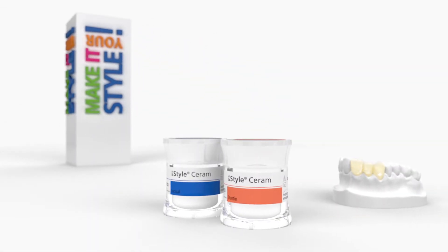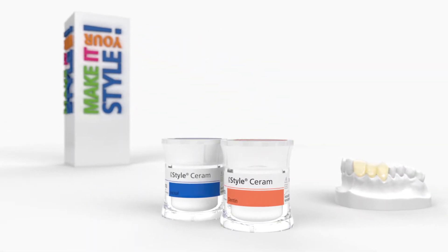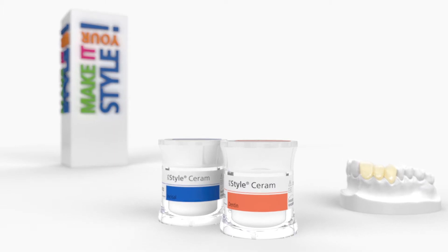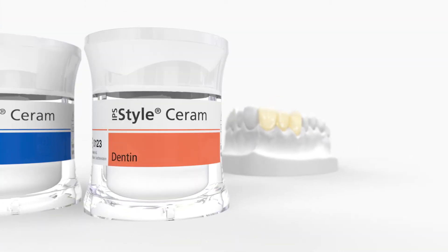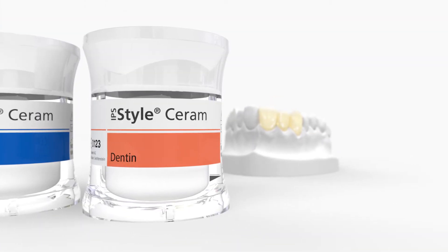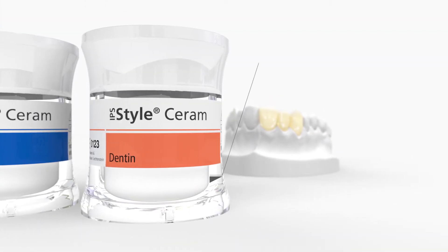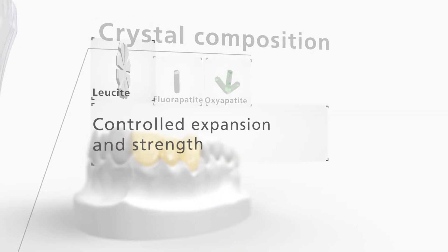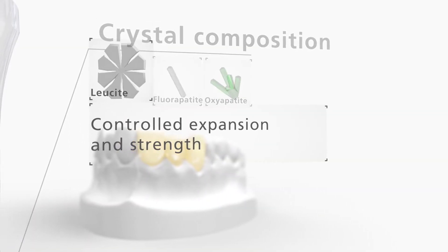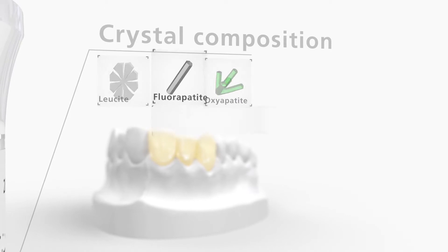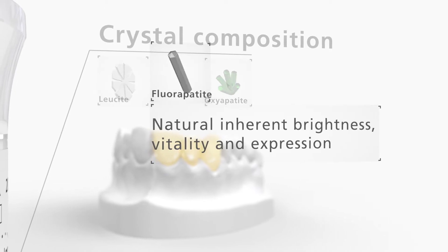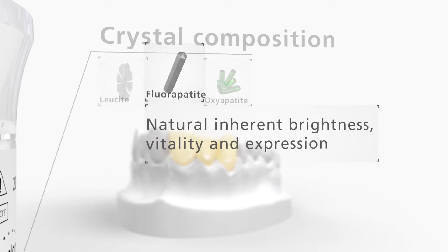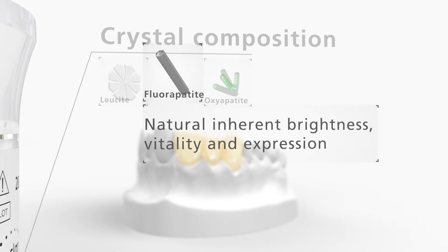IPS Style is the first patented metal ceramic to incorporate oxyapatite crystals. The material features a tailored crystal architecture: lucite crystals for controlled expansion and strength, and fluorapatite crystals for natural inherent brightness, vitality and expression.